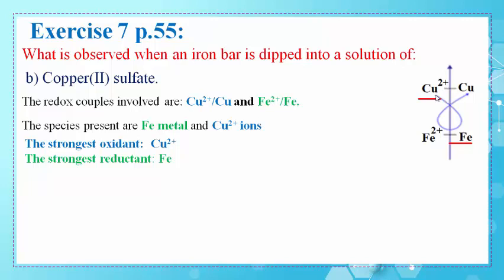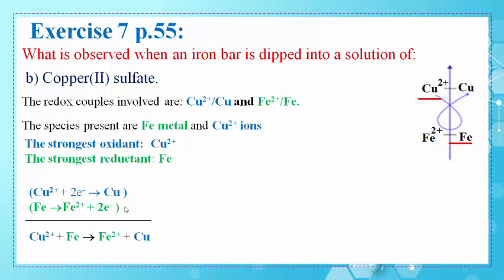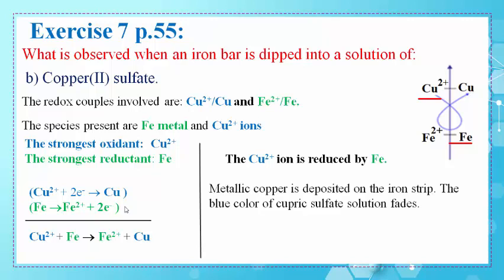The half reactions are: Cu2+ is reduced to Cu by gaining two electrons, and Fe is oxidized to Fe2+ by losing two electrons. Since both half reactions involve two electrons, we can directly add them to get the overall equation: Cu2+ + Fe → Fe2+ + Cu. The Cu2+ ions are reduced by Fe metal, so metallic copper is deposited on the iron strip, and the blue color of the copper(II) sulfate solution fades since the Cu2+ ions are being reduced to Cu.